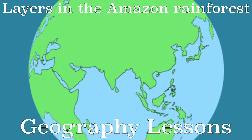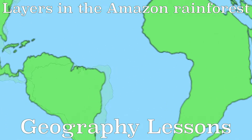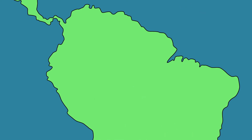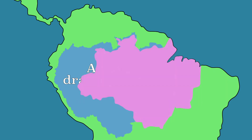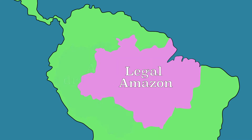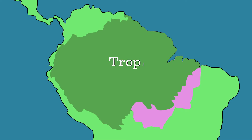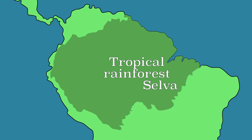The Amazon is a huge region in South America. The boundaries of the Amazon region are not always clear. Some use the boundaries of the Amazon drainage basin. Others point to the boundaries of the 9 Brazilian provinces that make up the legal Amazon area. In this video, the boundary of the biome is used. This means the tropical rainforest, which is also called the Selva — the entire area where the climate and therefore the vegetation show many similarities.